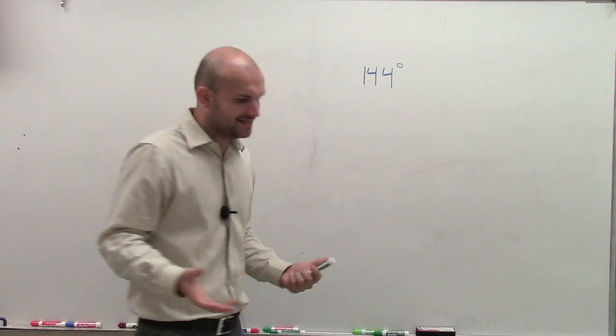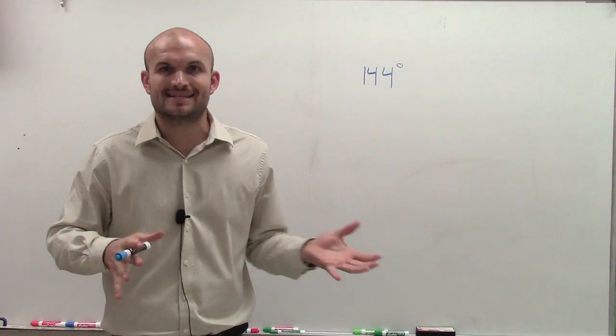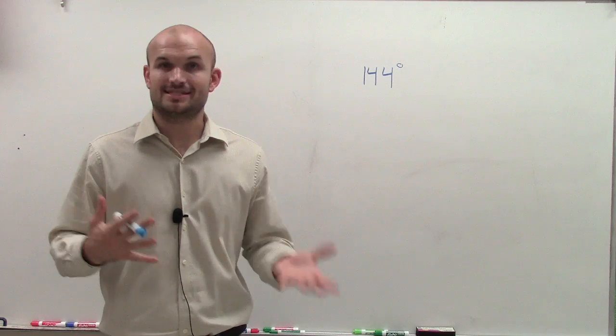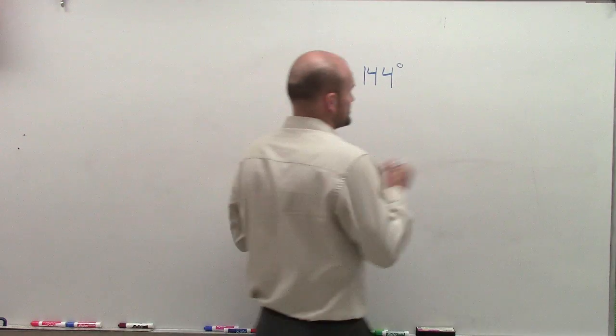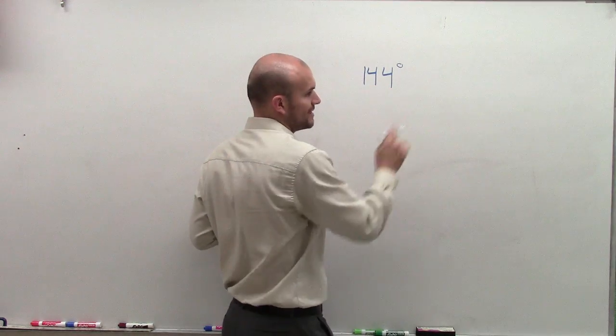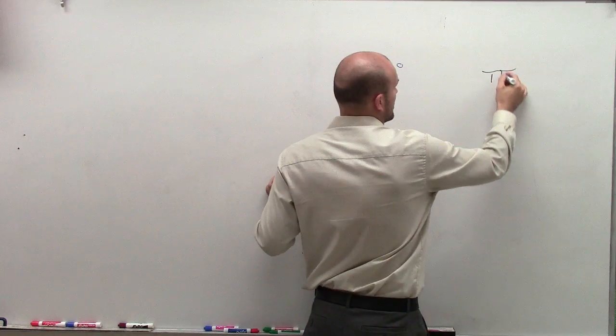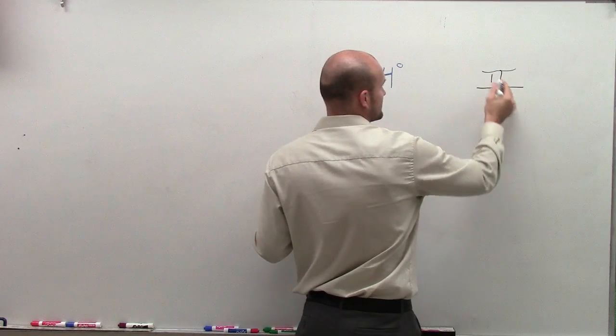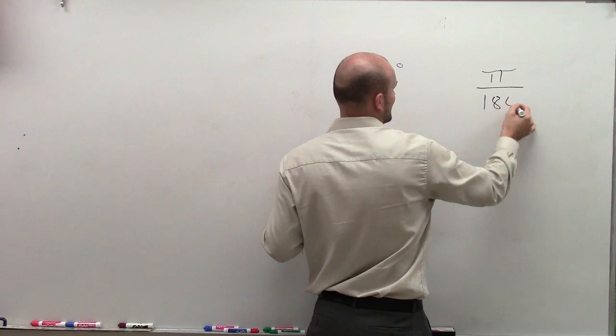So to do that, we need to remember how radians and degrees relate to each other. We use a certain ratio. From degrees to radians, we're going to use the ratio pi equals 180 degrees.